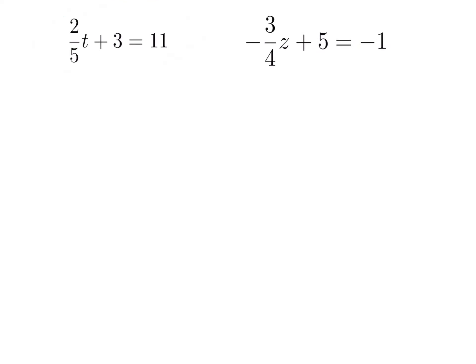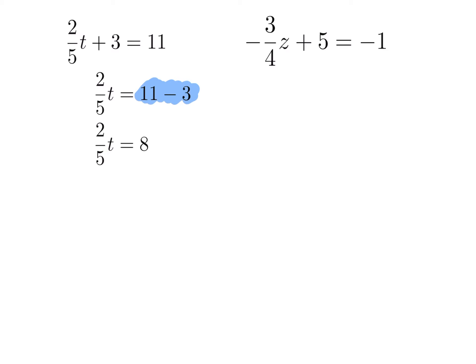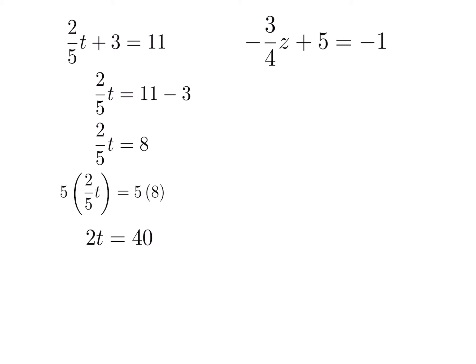For this problem, first subtract 3 on both sides — 11 minus 3 is 8. Now we need to remove the 2 and the 5. We multiply across by 5 to cancel the denominator, leaving 2t equals 40. Dividing across by 2 gives t equals 20.